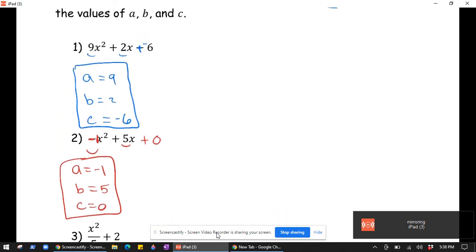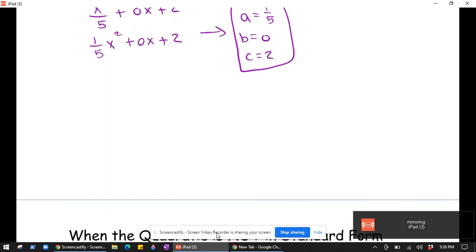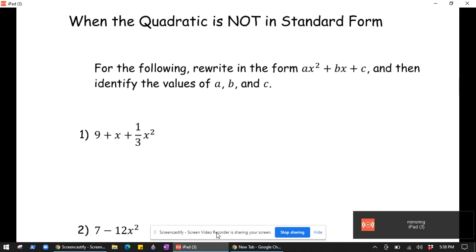So these examples were somewhat straightforward because our quadratics are all presented in standard form. Let's look at a couple where that's not the case. So we have two things to do here. First is to write it in the form ax² + bx + c, and then we identify the values of a, b, and c.